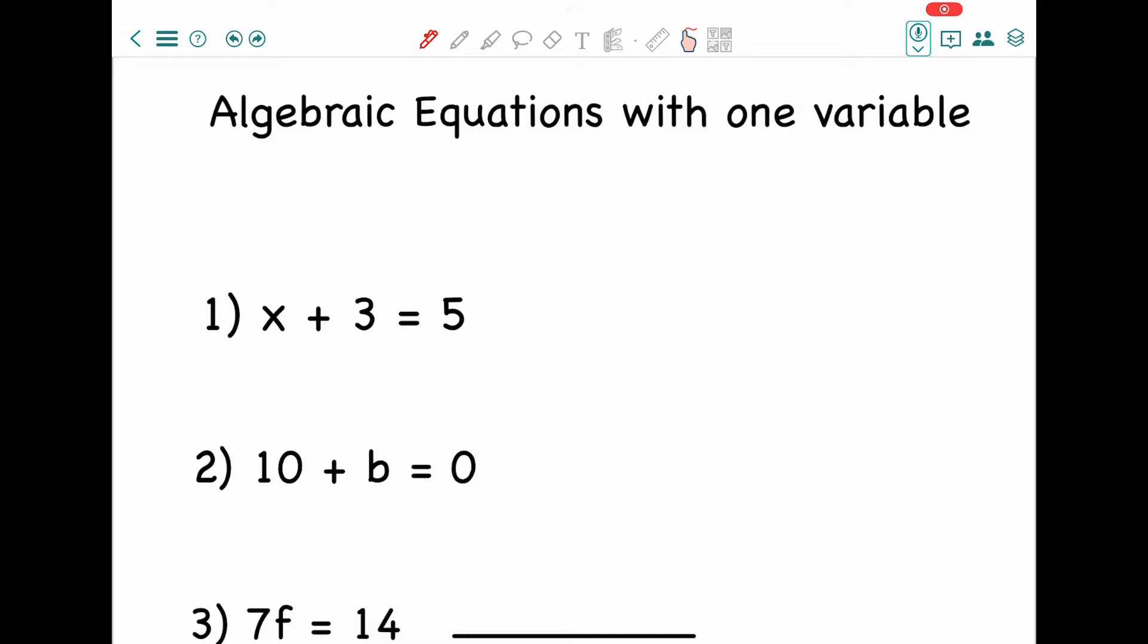In algebra, a variable can be represented by any letter. It can be a, b, c, or most famously known as x. A variable could equal any number. It can be 1, 2, 100, 1000, anything.